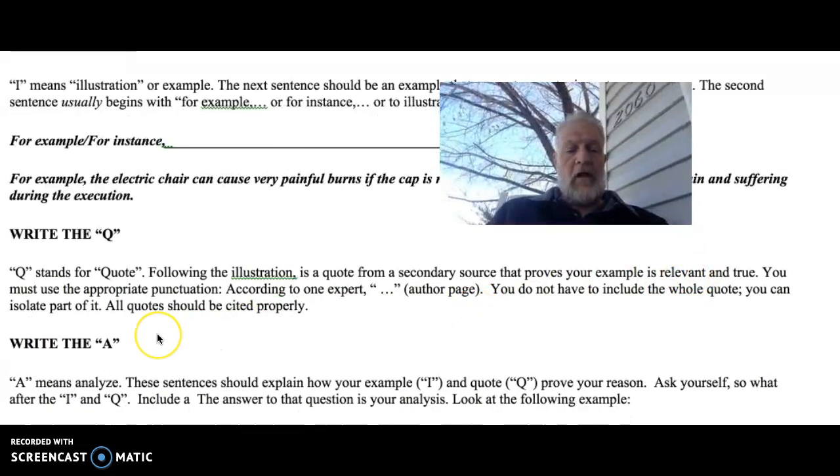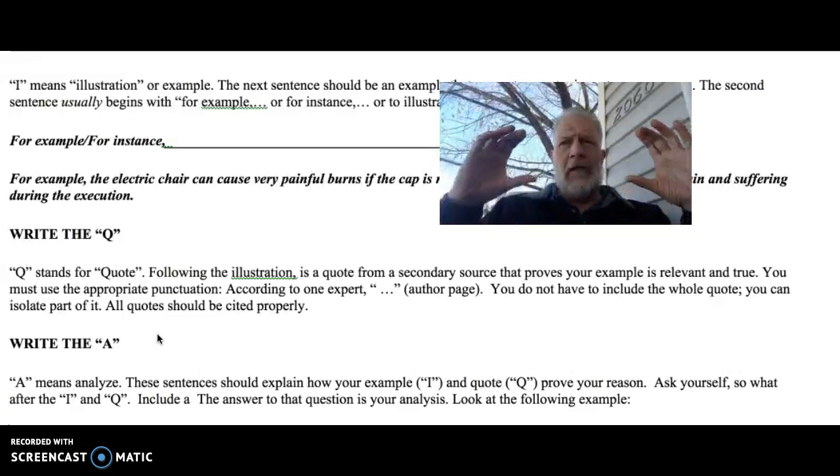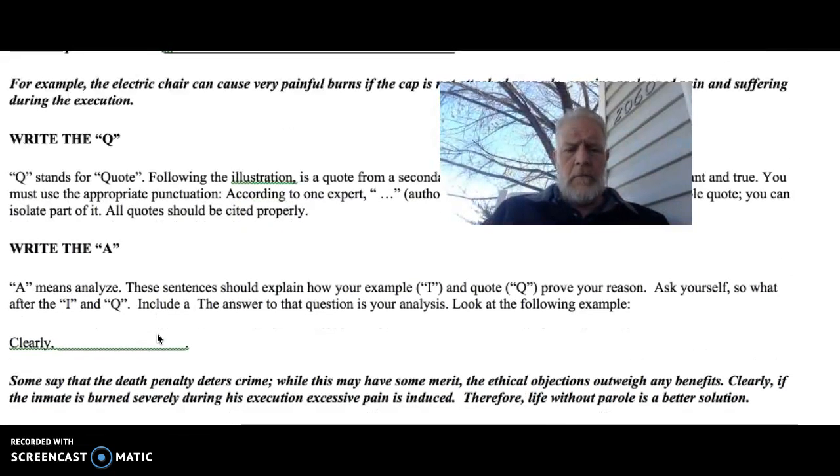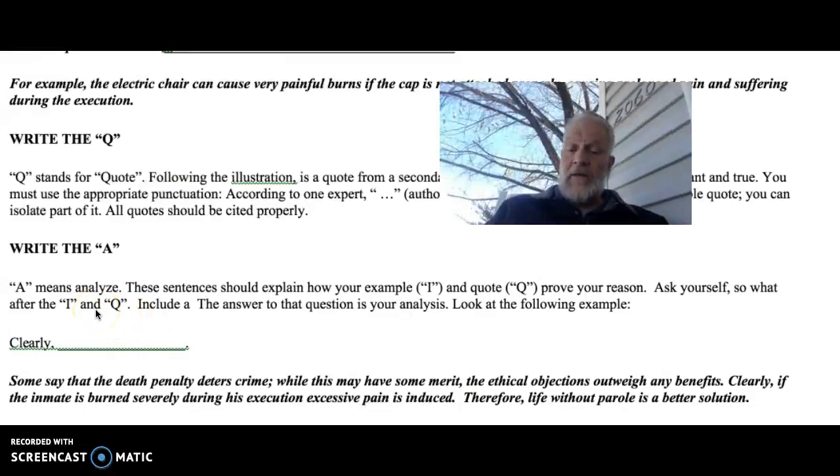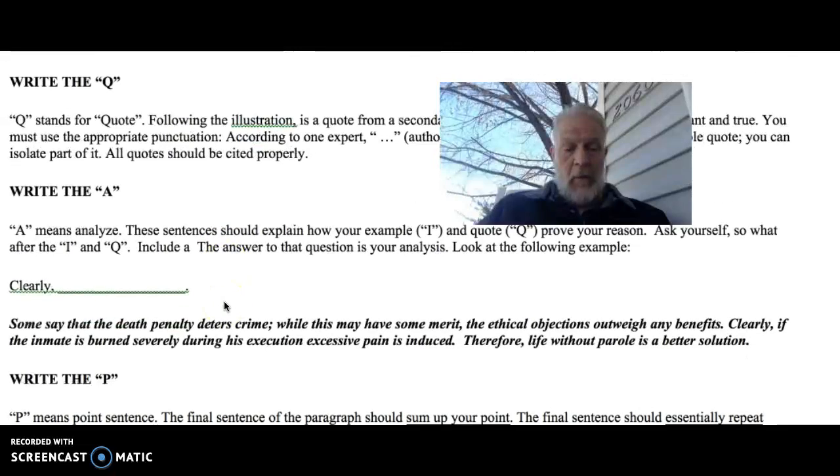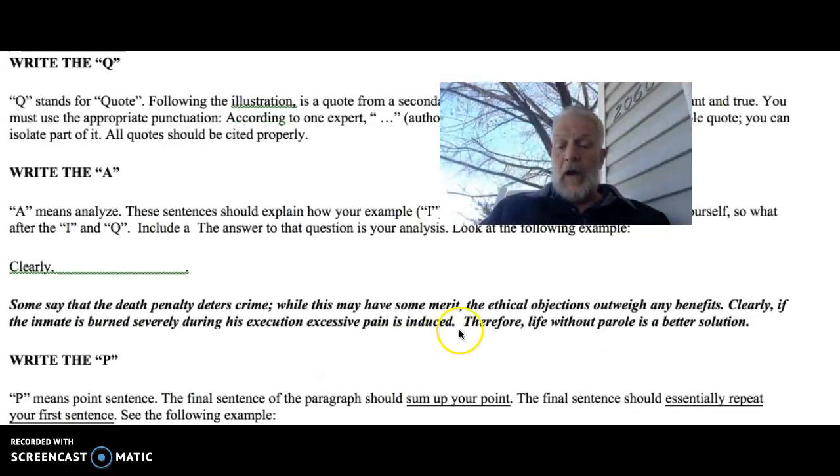You don't have to include the whole quote. You can isolate part of it. Also, remember, if it's over five lines in length, you have to indent to single space, and indent the whole quote five spaces. Then you would write the A. A means to analyze. Basically, it would explain your example, and it would explain how I and Q prove your reason. Ask yourself, so what after the I and Q? Include the answer to that question. You would say something like, clearly, if the inmate is burned severely during his execution, excessive pain is induced. Therefore, life without parole is a better solution. You could also, when using therefore, use a semicolon right here, and you would make a small t. That's how you make your sentences more interesting.